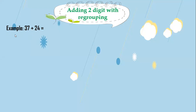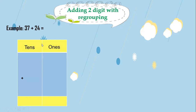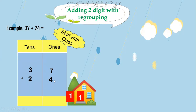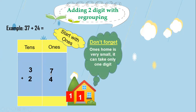The first example: if I have 37 plus 24, how do we add 37 plus 24? First, you have to write the problem vertically, so we will write tens and ones. 37: we have 7 in ones and 3 in tens. And 24: we have 4 in ones and 2 in tens. Now we will add ones with ones and tens with tens.